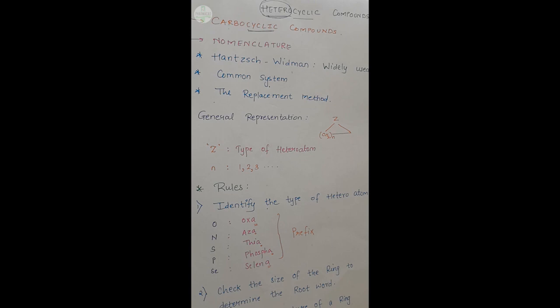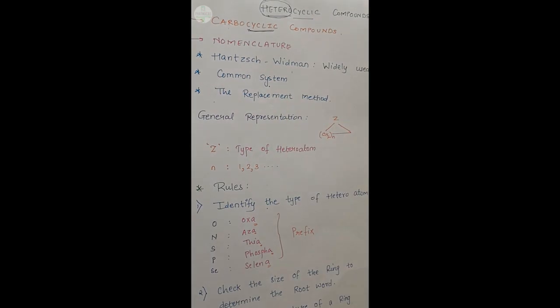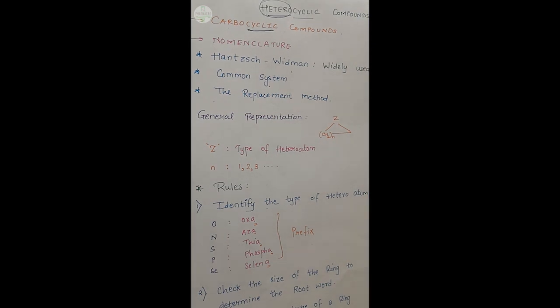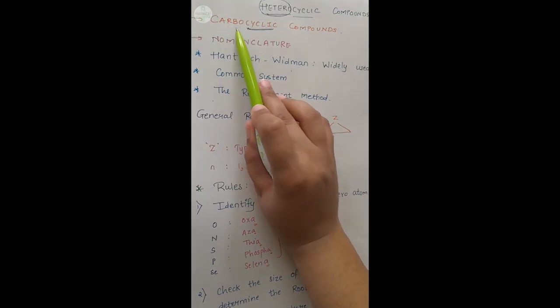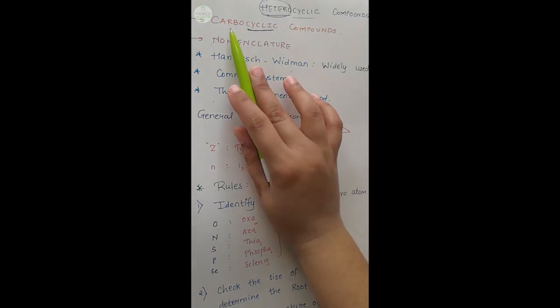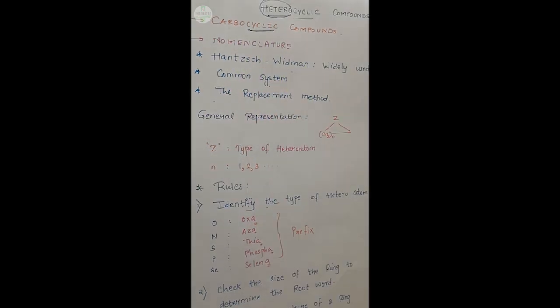Heterocyclic compounds के पहले आपको ये पता होना चाहिए कि carbocyclic compounds क्या होते हैं. ये cyclic compounds हैं — इनके नाम में ही cyclic है, यानि कि ये ring compounds हैं. और एक और वर्ड है carbo. Carbo का meaning है, these cyclic compounds are made up of only carbon atoms. इसलिए इन compounds को carbocyclic compounds भी कहा जाता है.